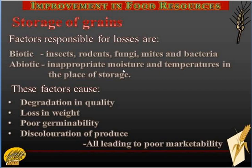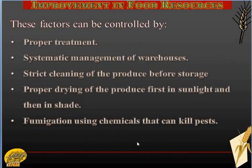If these factors are not controlled, they lead to a fall in the quality of grains and loss in the weight of grains. Germinability will be very poor — seeds will not germinate when put in the soil. They will also lose their natural color and become discolored. All these factors together lead to poor marketability, meaning the farmer will not get the right price for his produce.